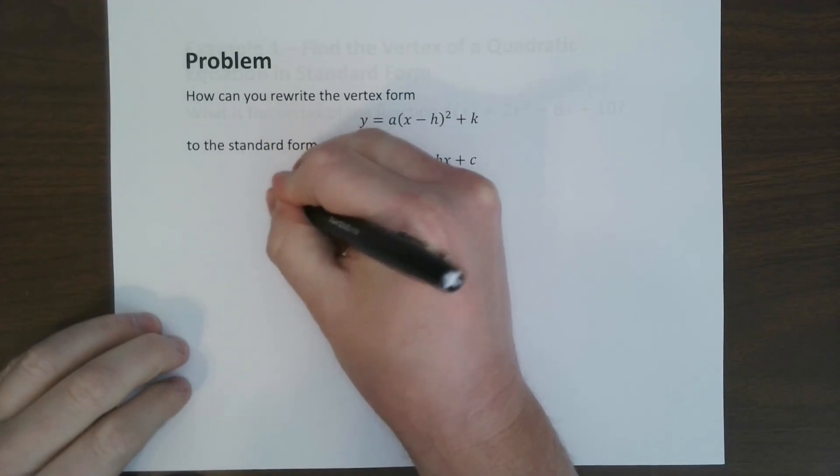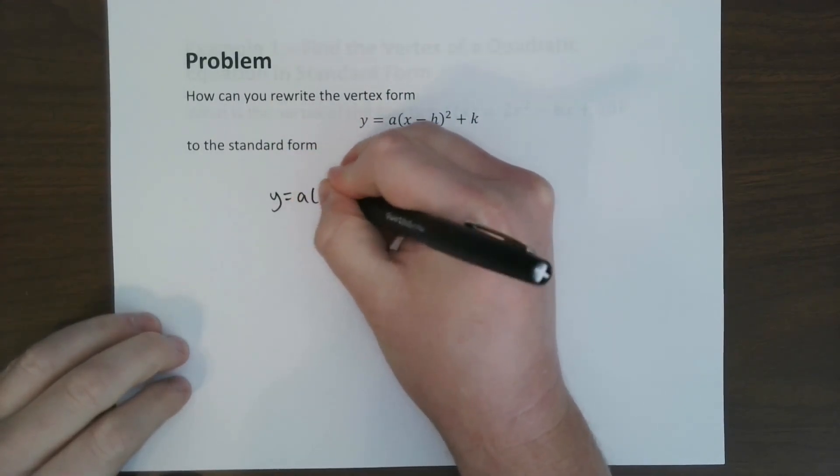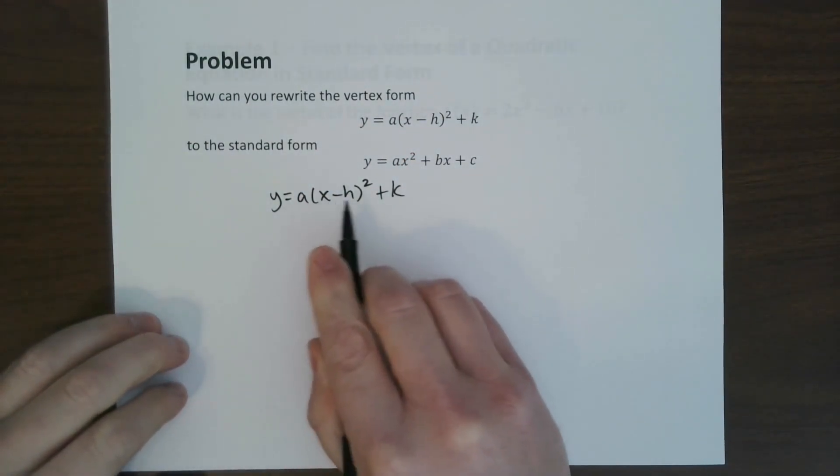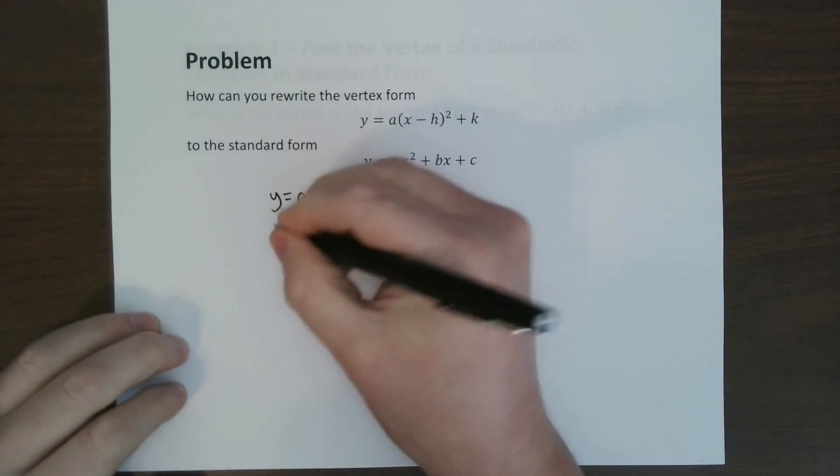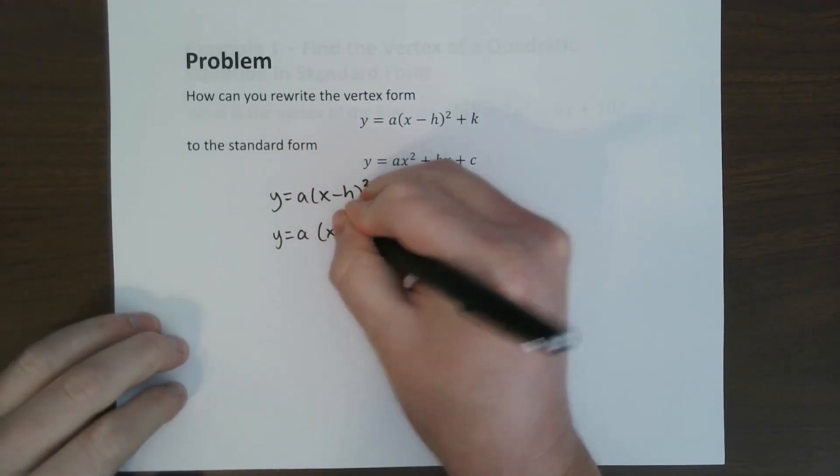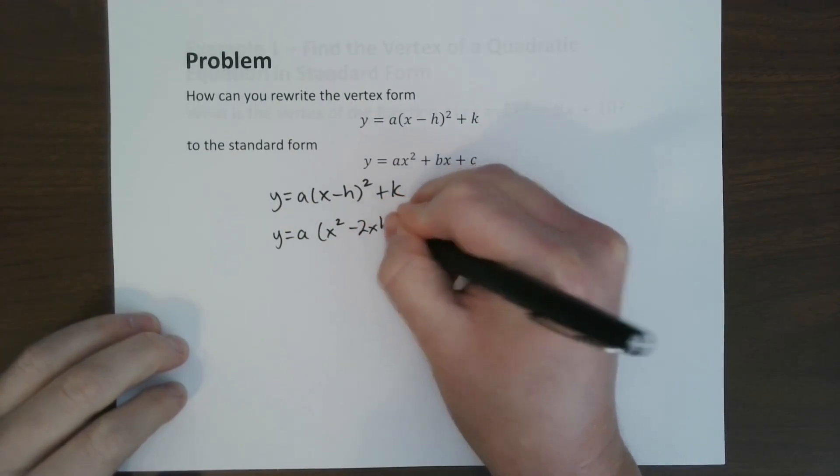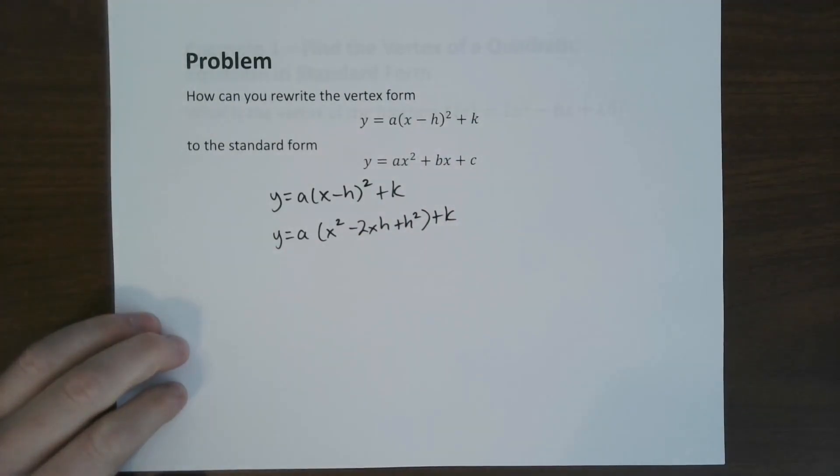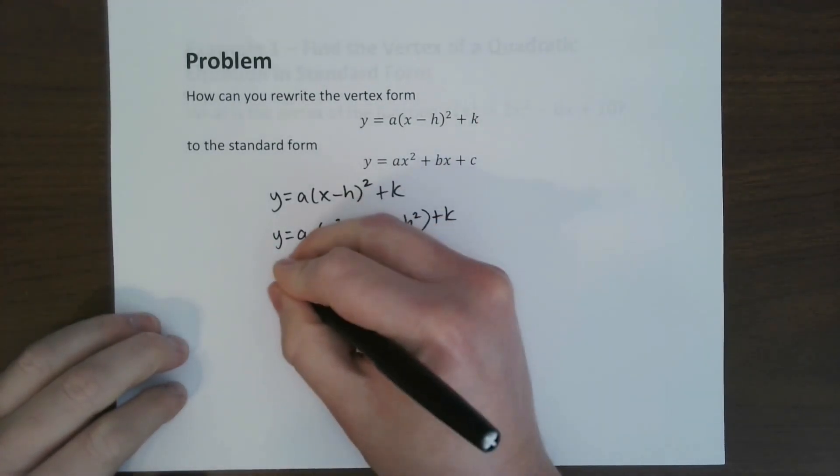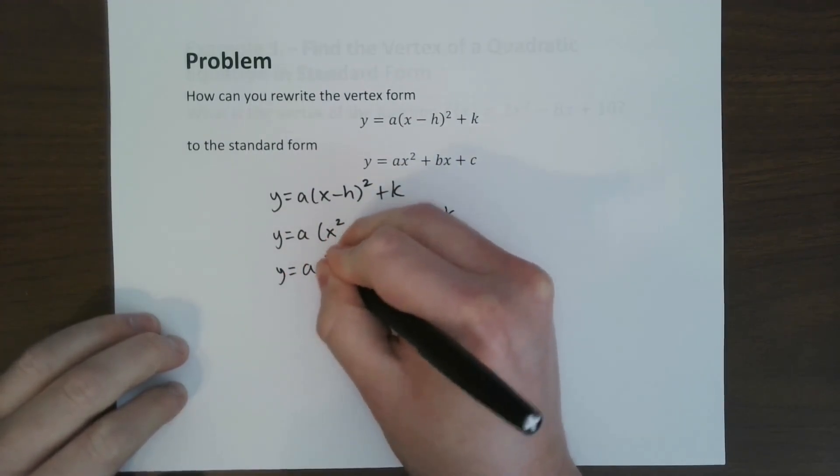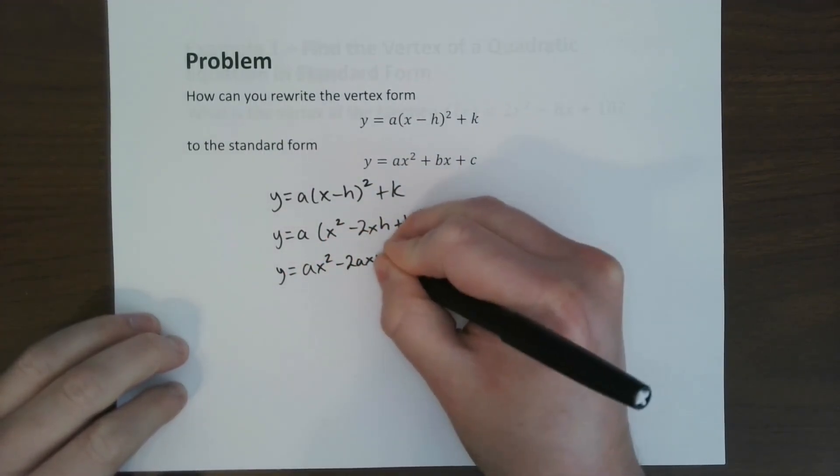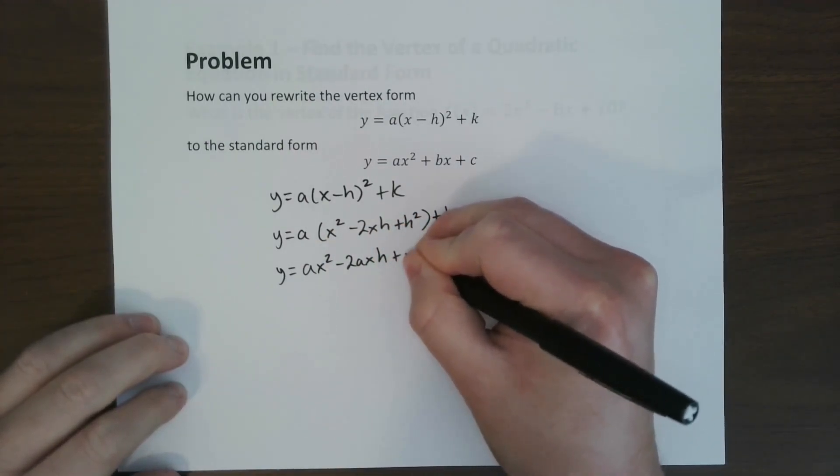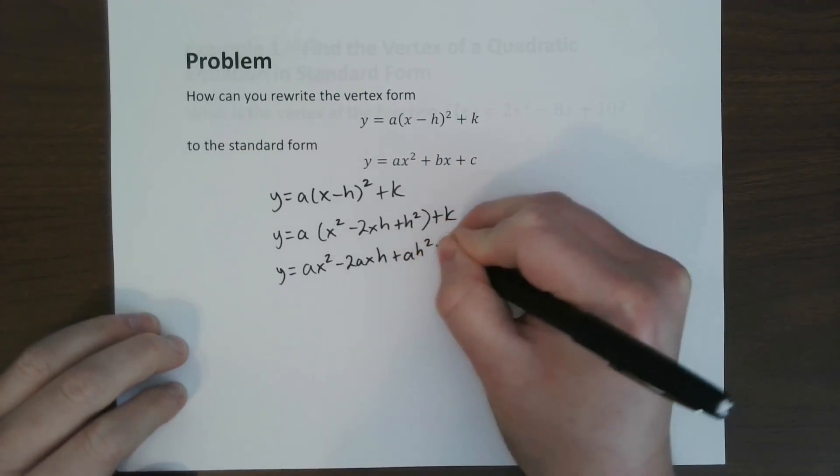So first, we start with the vertex form. First thing we're going to do is we're going to multiply out the x minus h squared, which gives us ax squared minus 2xh plus h squared plus k. What we do from here is we're going to go ahead and distribute the a. So y equals ax squared minus 2axh plus ah squared plus k.